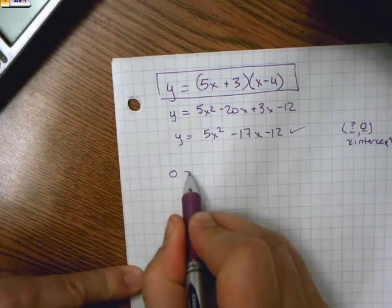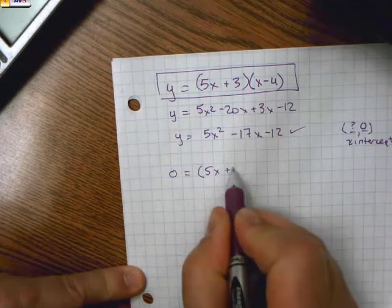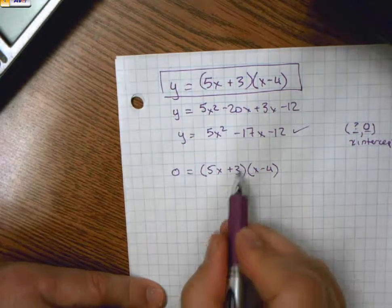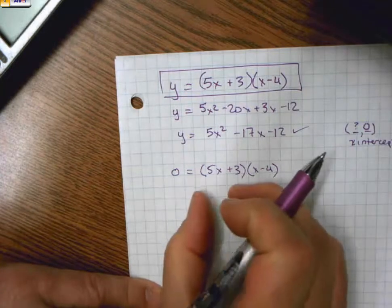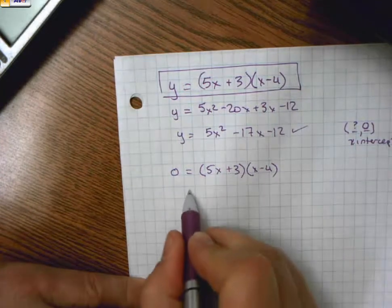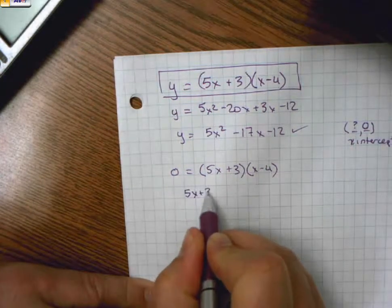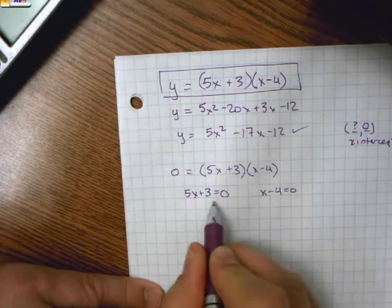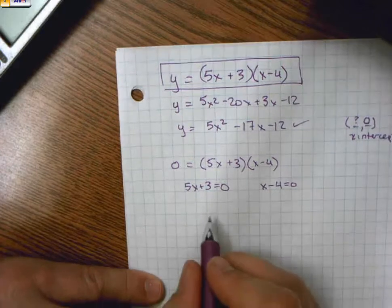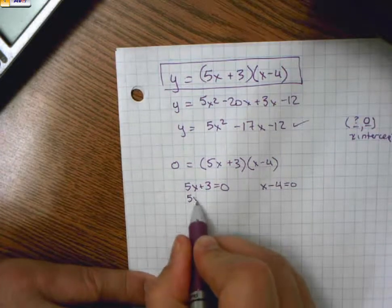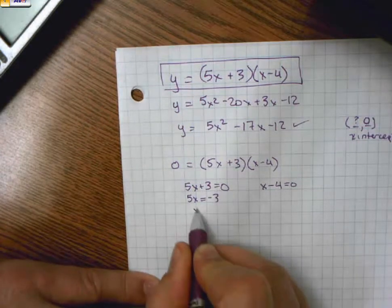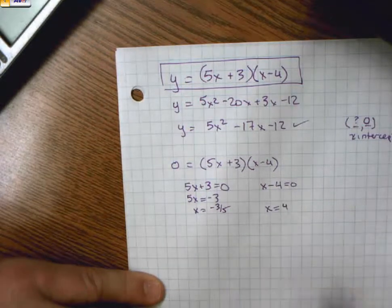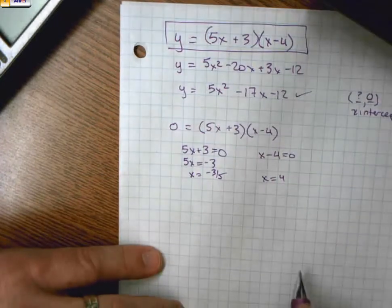If I were to set this expression equal to zero, then I know that these two things, these chunks, multiply together to make zero. The only way that can happen through the zero product property is if one of them is zero. So either 5x plus 3 equals zero or x minus 4 equals zero. If the 5x plus 3 is equal to zero, then x is equal to negative 3/5. If the x minus 4 is equal to zero, then x is equal to 4.